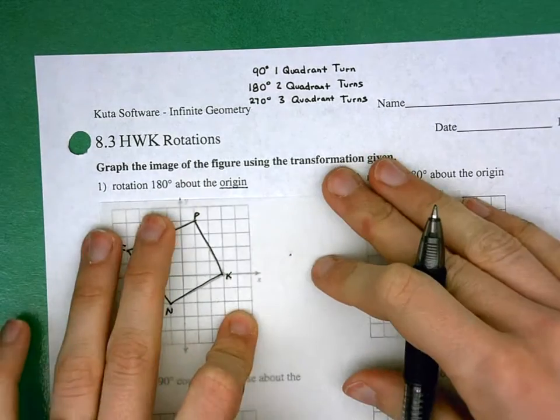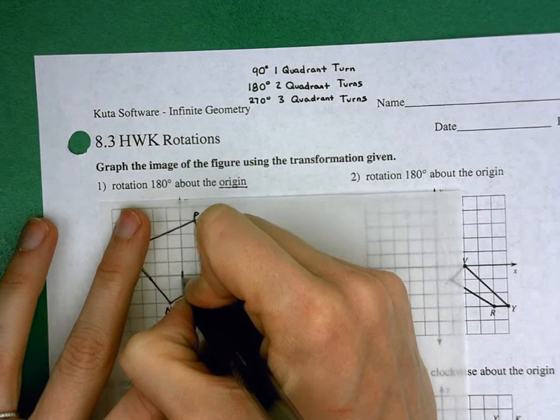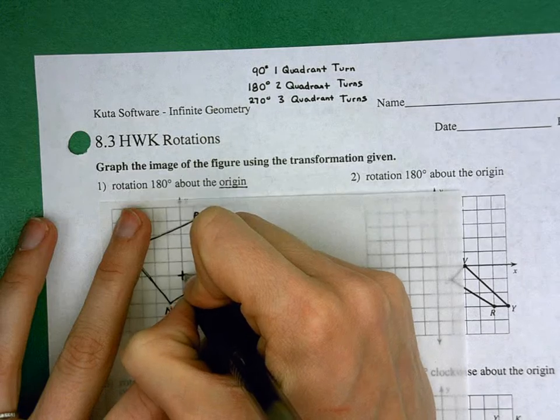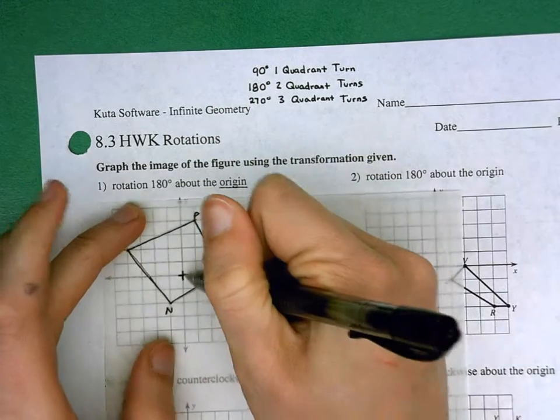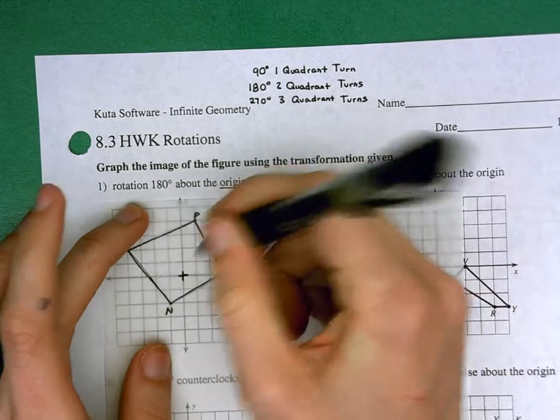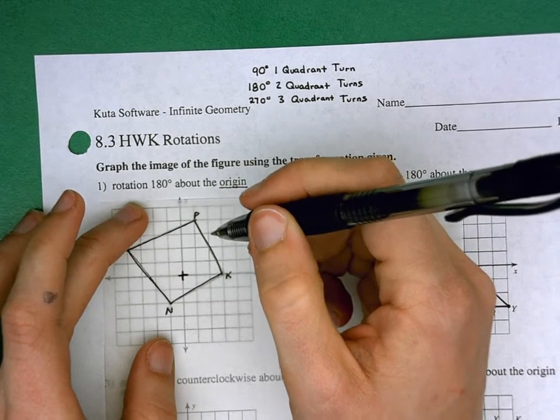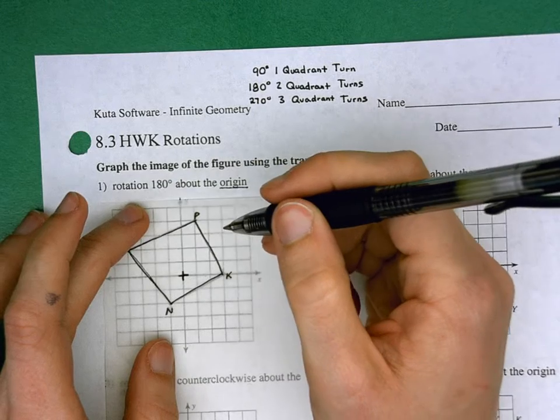In this case, I'm going to be rotating about the origin. That's my point of rotation. And so I'm going to draw in a little marker very carefully right at that point, right where the x and the y axis intersect. That's going to make sure that as I turn, I make sure to do a full 90 or a full 180 or a full 270 degree turn.